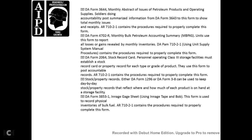DA form 3644 is the monthly abstract with the issue of the petroleum product with operating supply holders during a calendar period — similar output of the information. DA form 36433 shows the total monthly issue for the receipt. AR 710-21 contained with the procedure required to complete DA form 40702, the AR monthly bulk petroleum accounting summary — also used for the review of the monthly inventory.